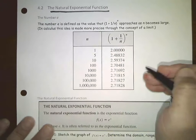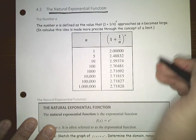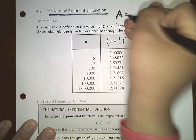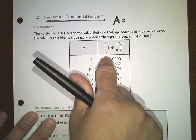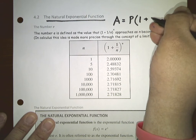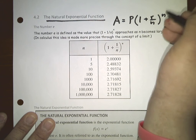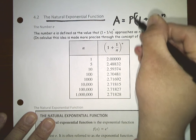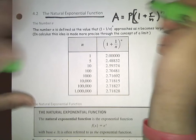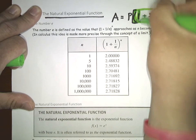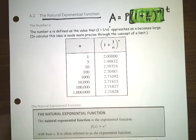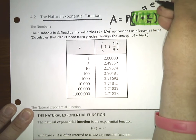This is very similar to the compound interest formula. The compound interest formula is P times 1 plus r over n, to the n times t power. This part — 1 plus r over n to the n — is approximately e to the r power.